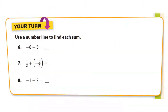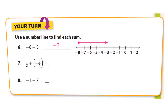Find the sum using a number line. For negative eight plus five: start at negative eight, move five to the right, and you end up on negative three. For negative one-half plus three-fourths: that equals negative one-fourth.